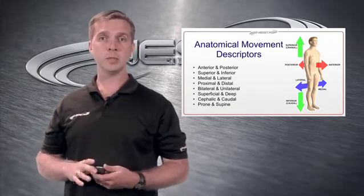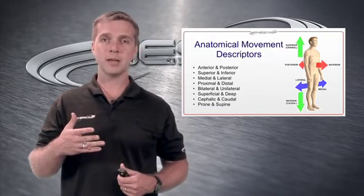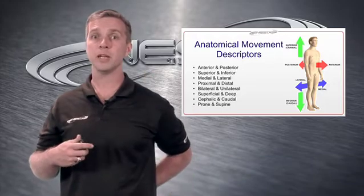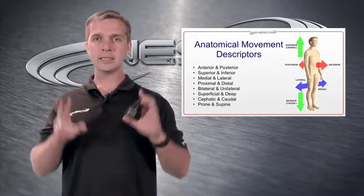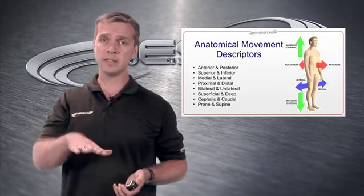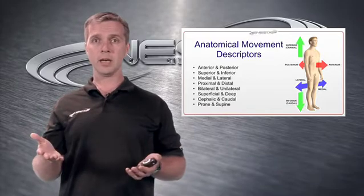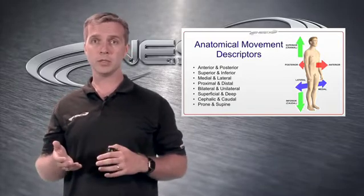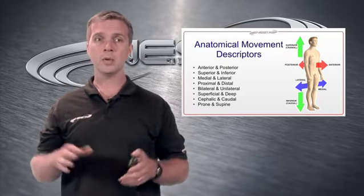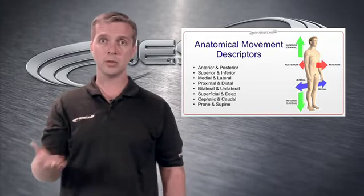Superficial means near the surface; deep means deep. You also have cephalic, towards the head, and caudal, towards the tail or tailbone. The last set is prone versus supine: a prone body position is laying face down on your stomach, while supine is laying on your back, face up. We'll learn about pronation and supination at the hand, wrist, and ankle later, but in terms of body position, prone is face down and supine is face up.